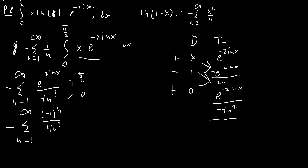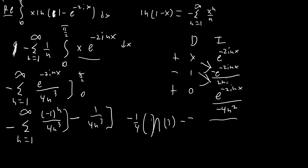We're also subtracting the value at 0, which is just 1/(4n³). So this is a pretty straightforward summation. The sum of 1/(4n³) is just ζ(3)/4, and the alternating sum is η(3)/4. So we have −1/4 · (η(3) − ζ(3)), where η denotes the Dirichlet eta function.